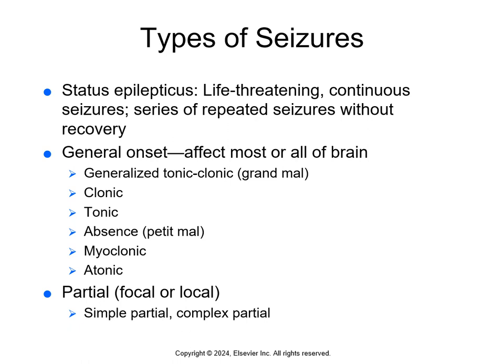Seizures are divided into two categories. Generalized seizures affect most or all of the brain. This category includes tonic-clonic or grand mal seizures that last two to five minutes, where the patient's body gets stiff and rigid and they lose consciousness. Clonic seizures involve the patient thrashing as their muscles contract and relax — patients may bite their tongue or have an incontinent episode. Tonic seizures cause the body to tighten up with loss of consciousness, tachycardia, sweating, flushing, incontinence, and pupil dilation, lasting 30 seconds to several minutes.